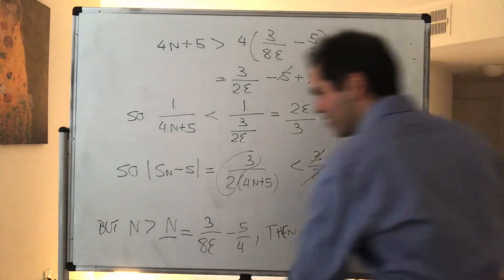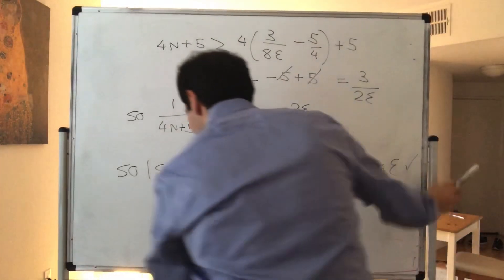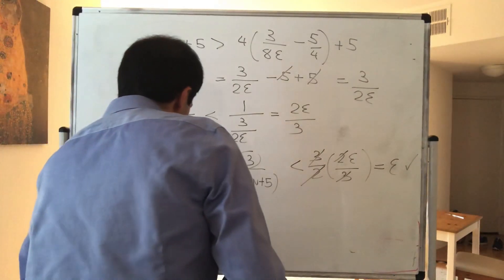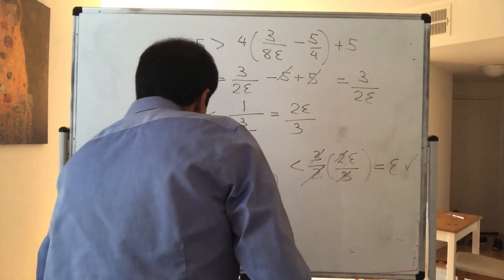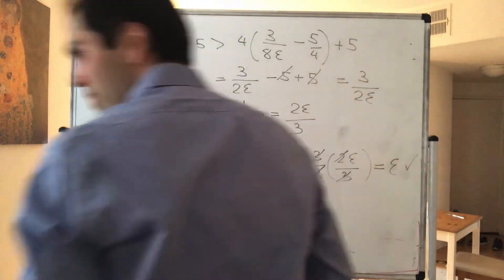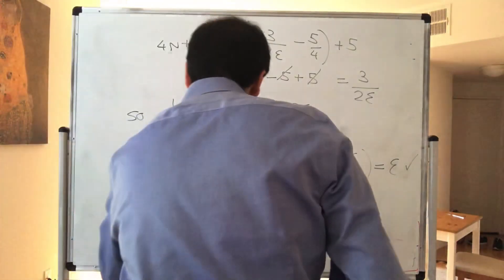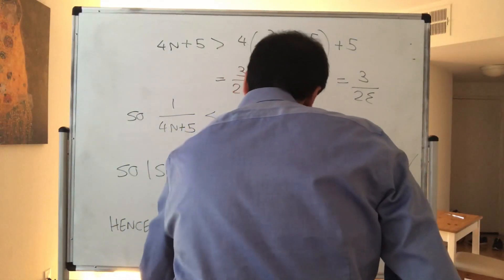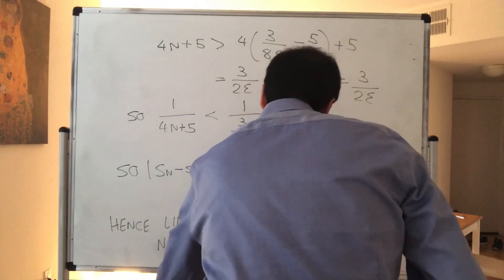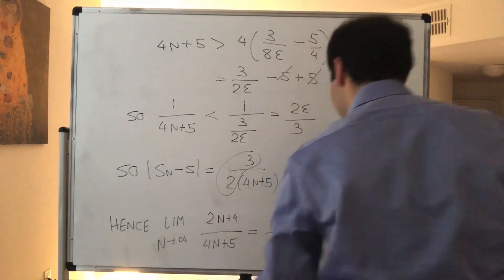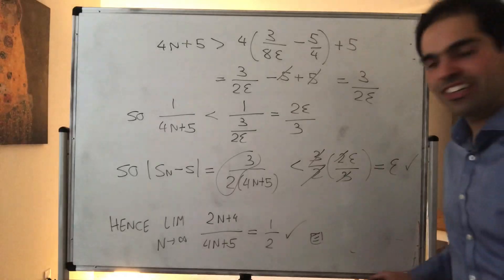And therefore, rigorously, we get that the limit, limit as N goes to infinity of, I believe, 2N plus 3, what was that? Yeah, 2N plus 4 over 4N plus 5 is indeed 1 half. Very good. And then you're done.